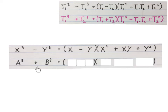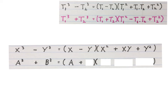Now let's factorize the sum of two cubes. We will end up with two factors: a smaller bracket with two terms in it and a bigger bracket with three terms in it. Take the cube root of the first term and write it here. Take this sign and write it there. Take the cube root of the second term and write it there — that is our first factor, which looks exactly like before, just without the cubes.